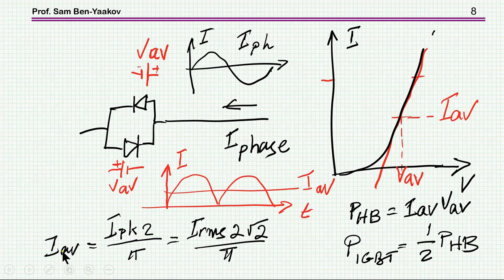Now, the average current is of course related to the peak, or RMS by this relationship. So the power dissipation of the full half bridge is the average current times the average voltage of the device, and therefore, per transistor, it's half. So that's it.